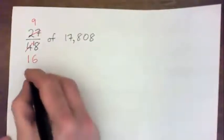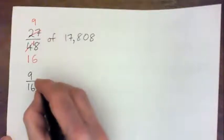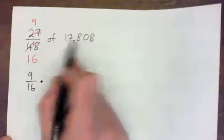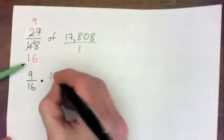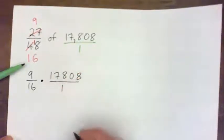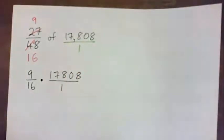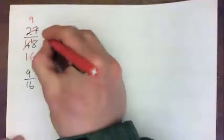So we have 9/16 of means multiply. Of. And we can turn this into a fraction also. Put it over 1: 17,808 over 1. Okay? So now we've got to get 9/16 times that. The of becomes multiply. Right?